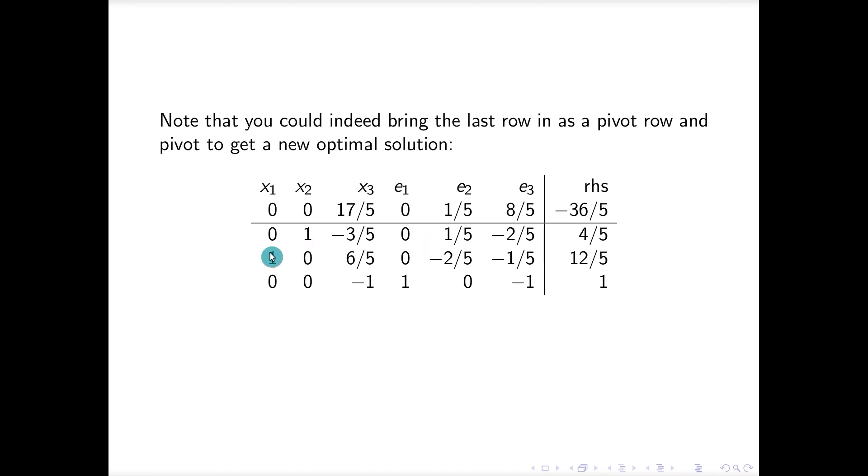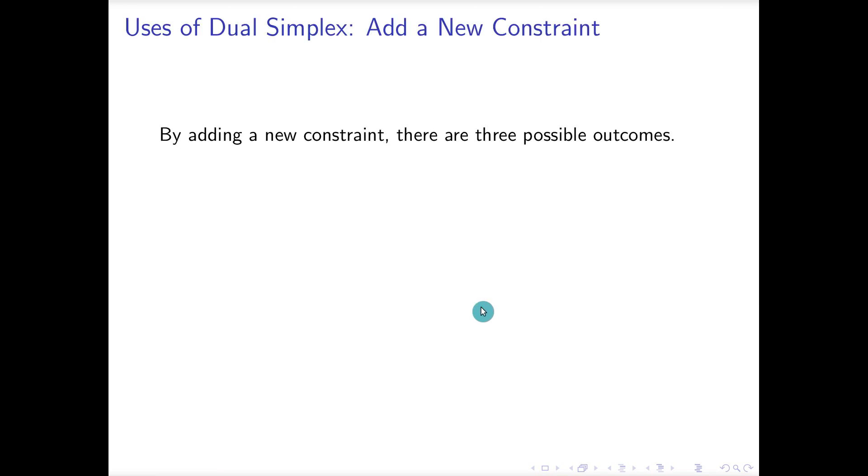Okay, and there it is. So if I do this pivot, then what's the new solution that I get? x1 is 12 fifths, x2 is four fifths, and then x3 stays at zero, but now e1 is in our solution instead of e3.